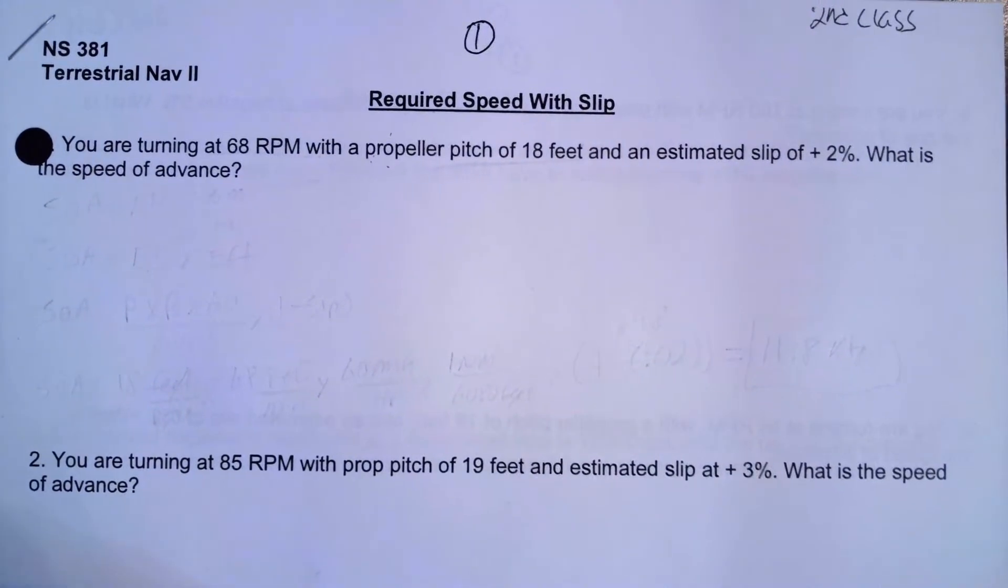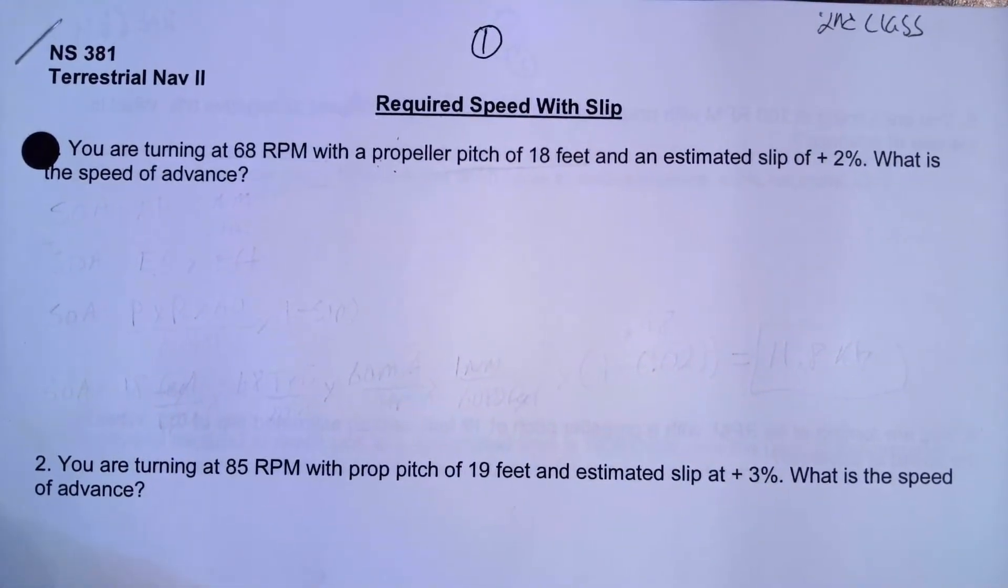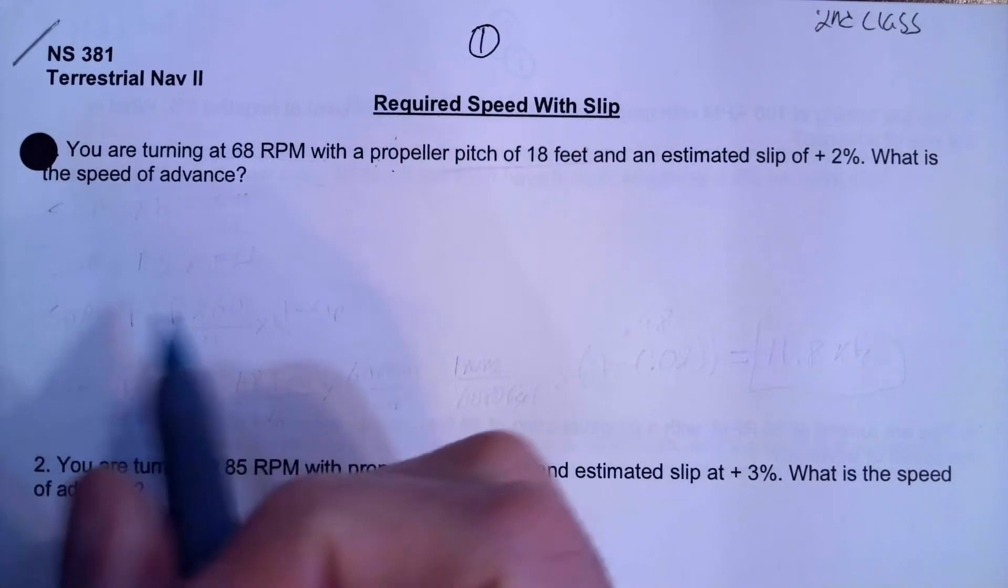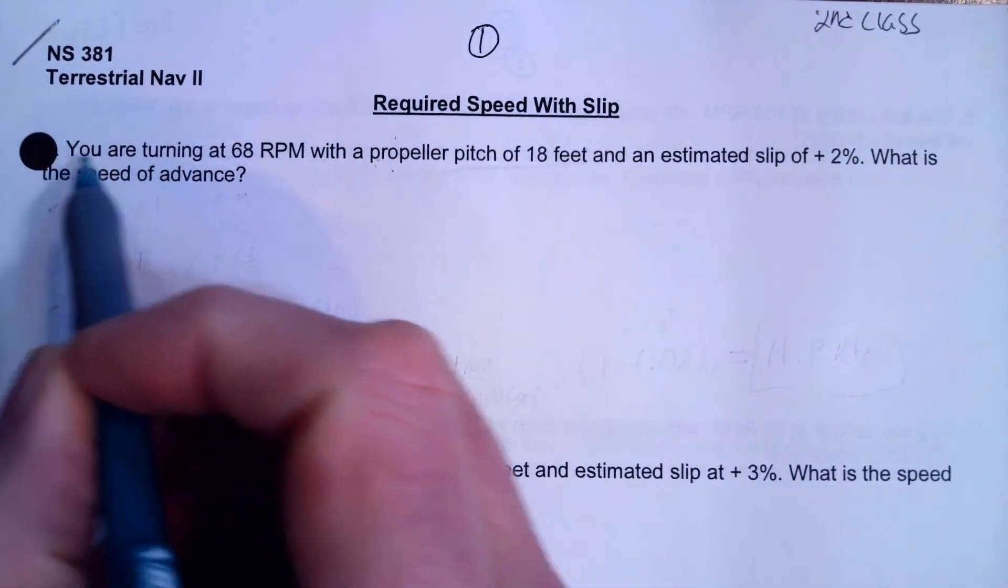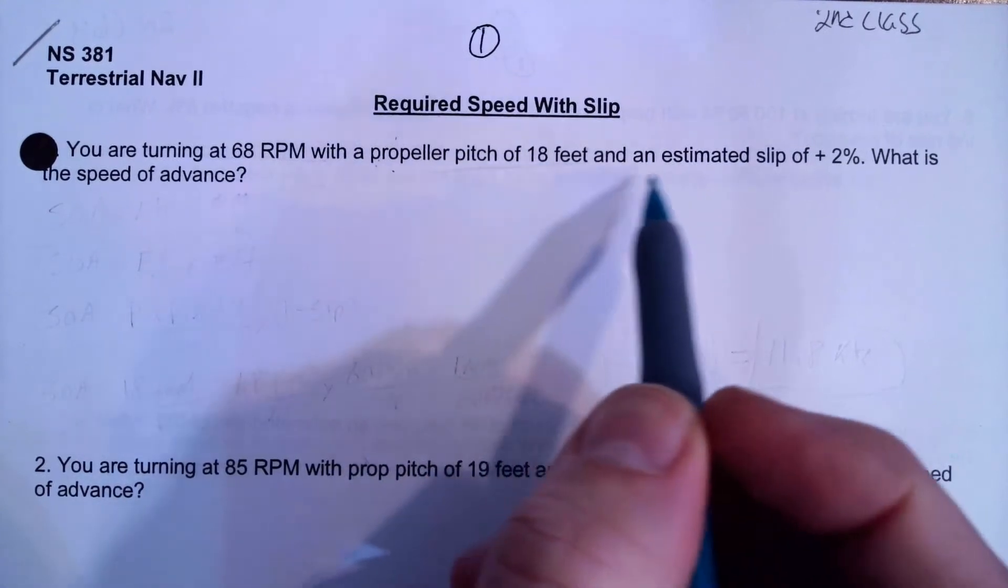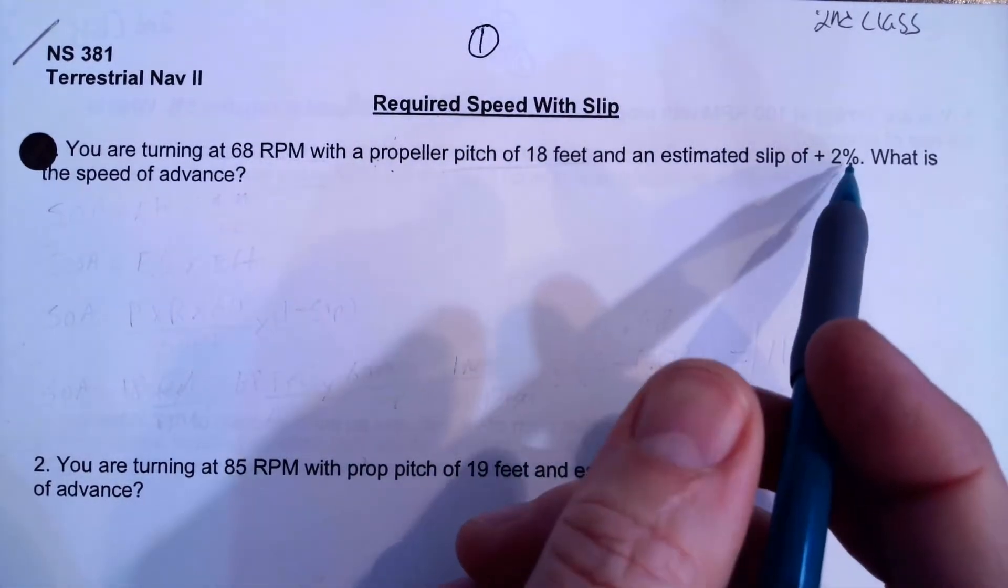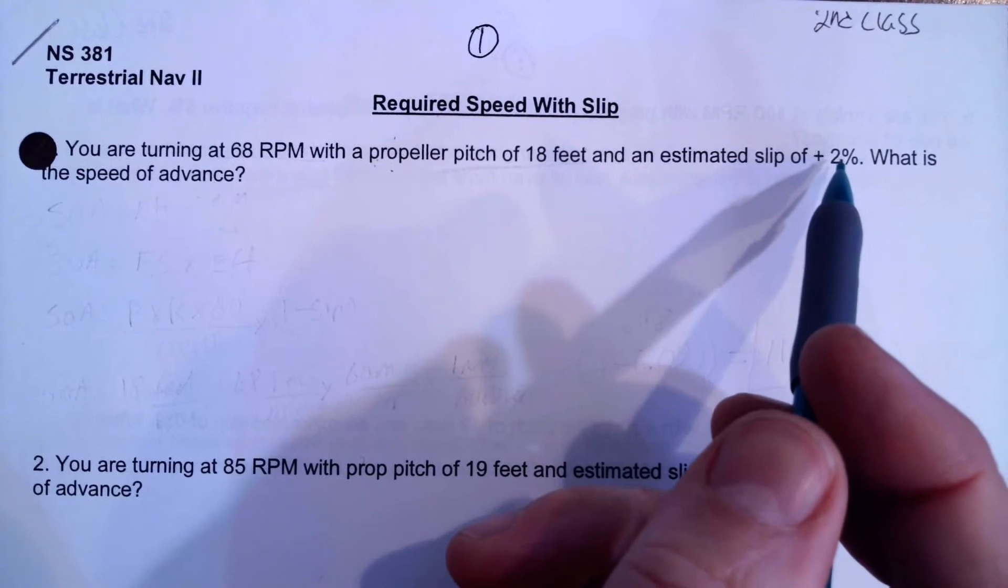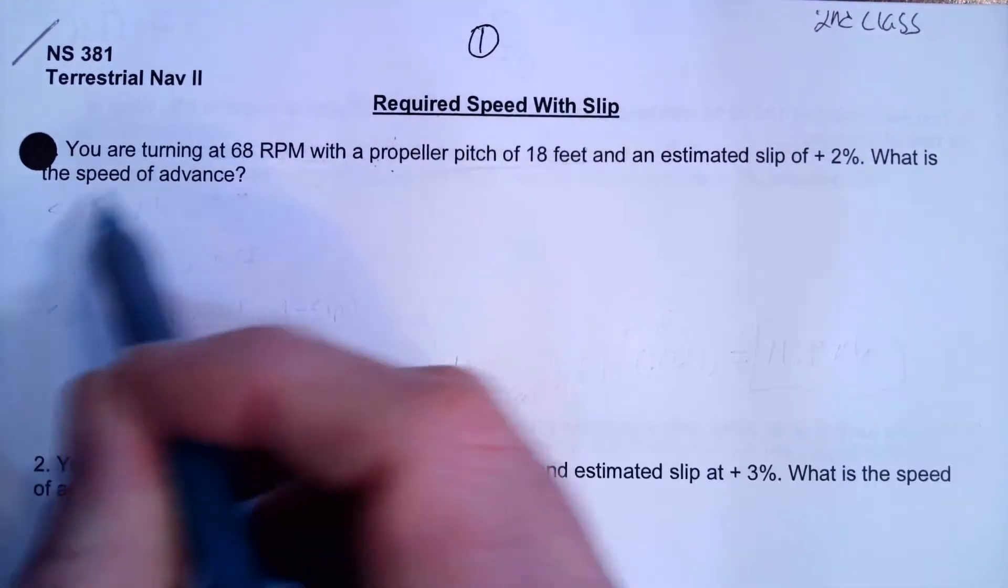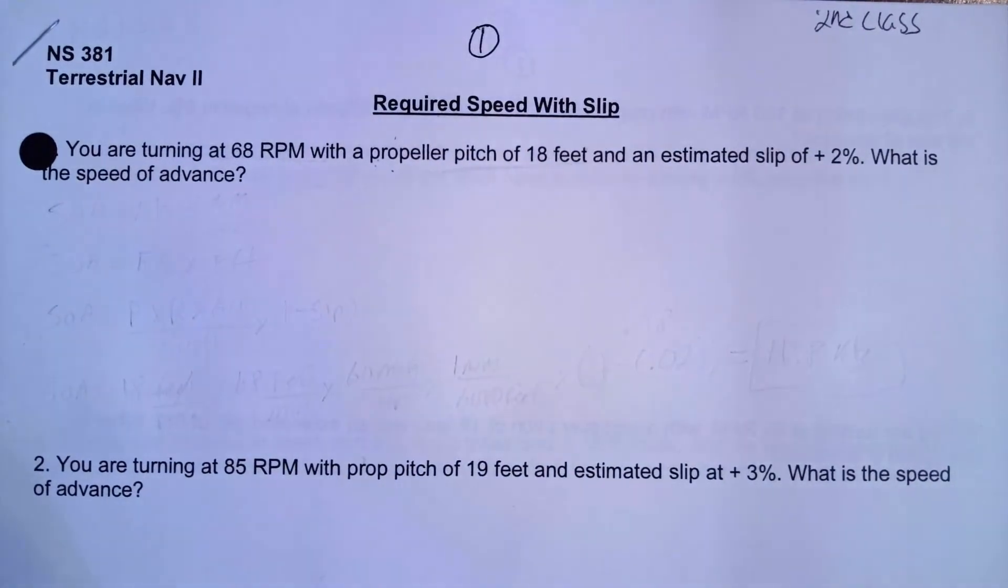Okay, in this video I'm going to show you how to solve this problem, calculating the speed of advance, the required speed, given some information. So what we're trying to do is, you're turning 68 RPM with a propeller pitch of 18 feet. You have an estimated slip of 2%, that means that we've lost 2%, so we're at 98% efficiency, and what is the speed of advance? So how fast are we actually going?